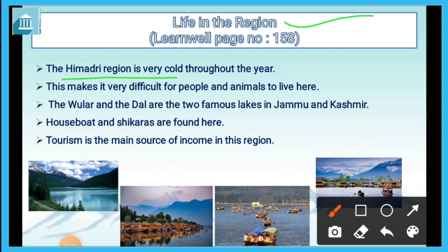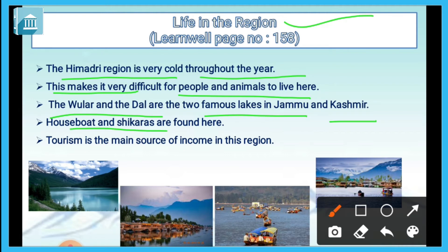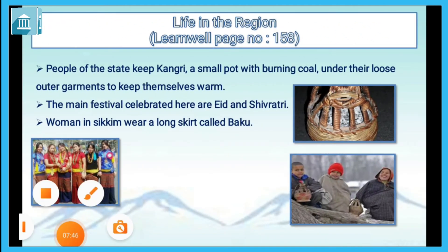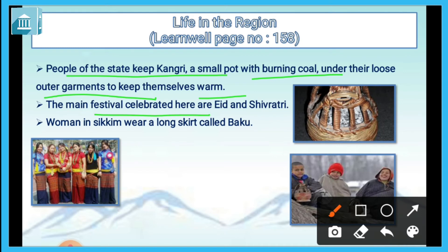The Himadri region is very cold throughout the year, making it very difficult for people and animals to live here. The Wular and the Dal Lake are two famous lakes in Jammu and Kashmir. Houseboats and shikaras are found here, and tourism is the main source of income in this region. People of the state keep Kangri — a small pot with burning coal — under their loose outer garments to keep themselves warm. The main festivals celebrated here are Eid and Shivratri.